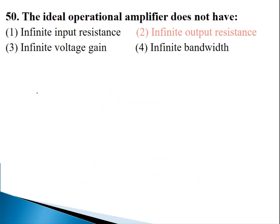The next question concerns the ideal operational amplifier. The properties are: input resistance is infinite, output resistance is zero, voltage gain is infinite, and bandwidth is infinite. An operational amplifier is a high-gain DC amplifier, and the general-purpose op-amp is the 741. It performs analog operations such as addition and subtraction.